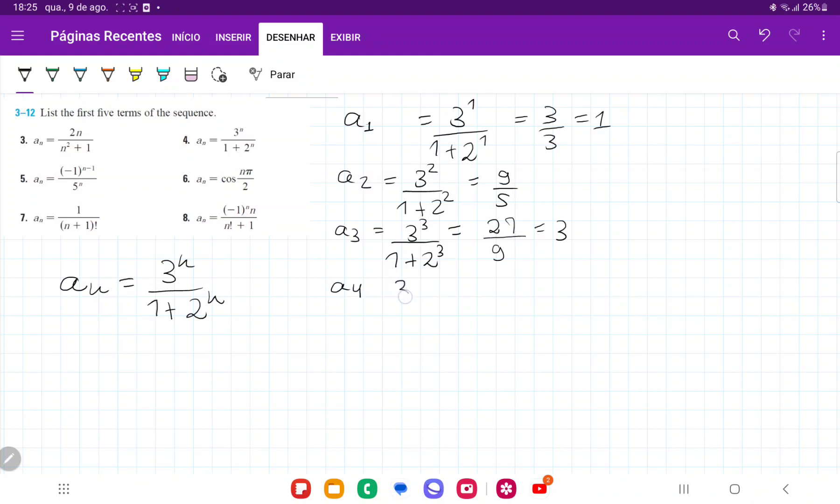For a₄, we have 3 to the power of 4 over 1 plus 2 to the power of 4, so that's 81 over 17.